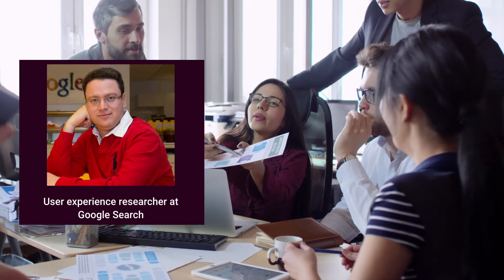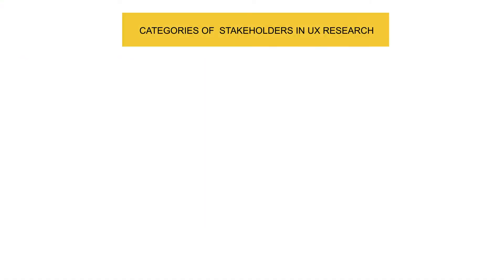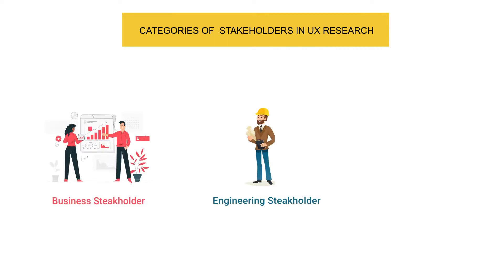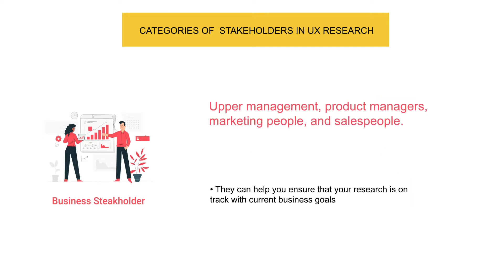As per Thomas Sharon, he divides stakeholders in user research into three overall categories: first, business; second, engineering; and third, UX people. Business stakeholders are basically upper management, product managers, marketing people, and sales people.